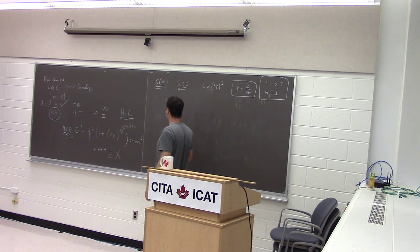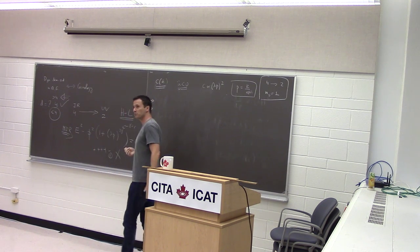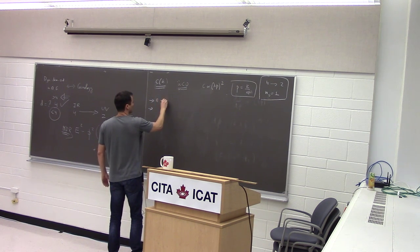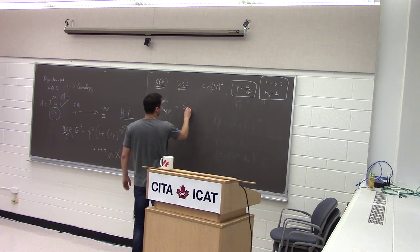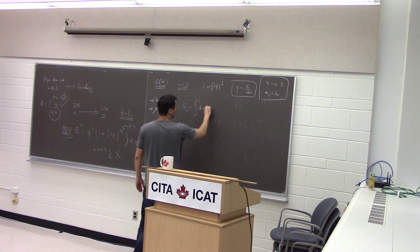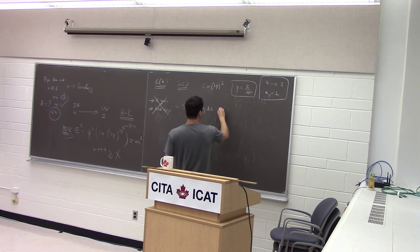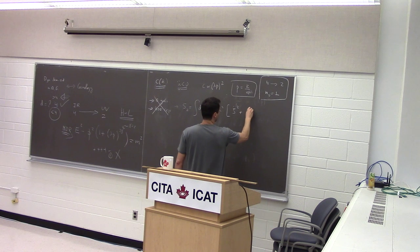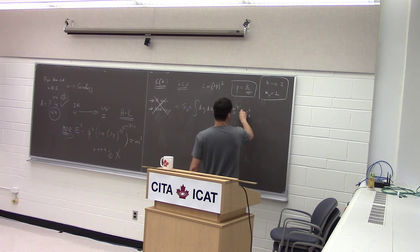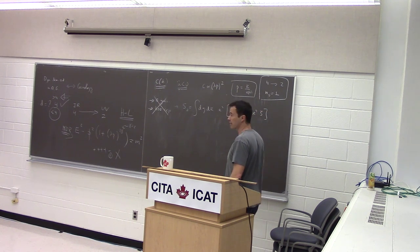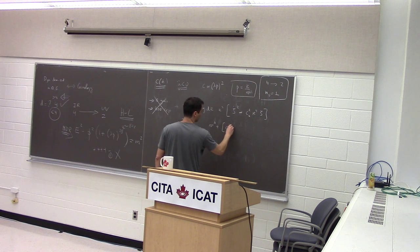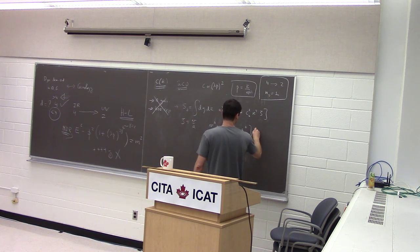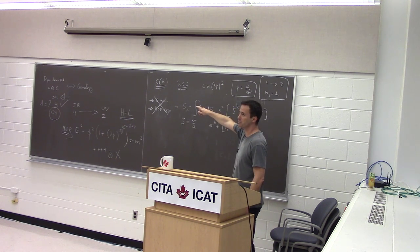The calculation for Hořava-Lifshitz is quite simple, though it looks like you need to assume Einstein gravity at second order and a higher-order derivative representation. Your second-order action is the same thing you find for inflation: you have dη dk, some function of k, an a² term, and the usual equation. With the usual transformation v over a, you end up with this Mukhanov-Sasaki equation which you know from inflation, still true here under these assumptions.